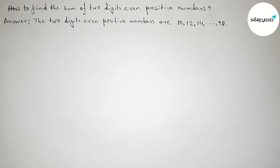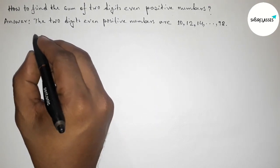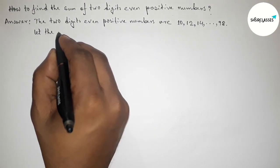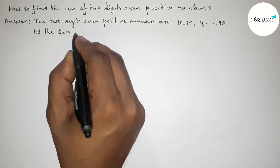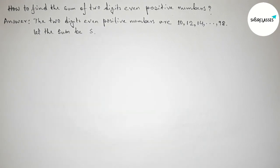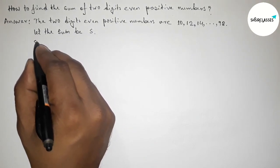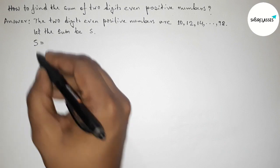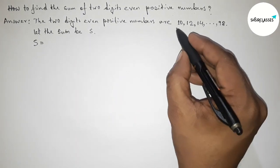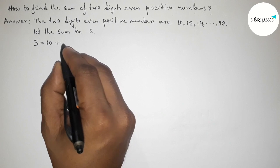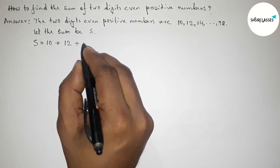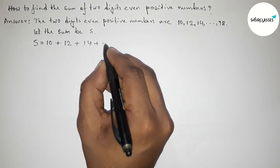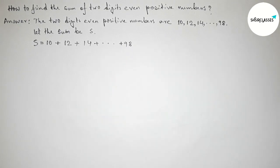Now we have to find the sum of all these two-digit even numbers. Let the sum be S. We can write S equals 10 plus 12 plus 14, continuing up to the last one, 98.